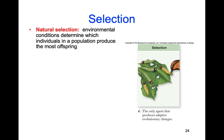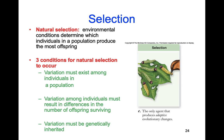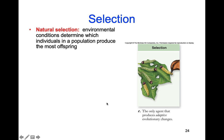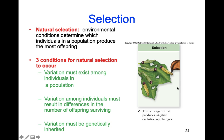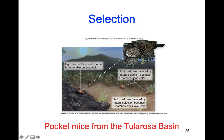Natural selection is a little different — the environment picks which traits are advantageous and which are not. In this picture there's a very hungry bird, and we've got yellow insects and green insects on a green leaf. The bird will pick the yellow insects because they show up more — so being green is advantageous, being yellow is definitely not. For natural selection to occur, three things must happen: there must be variation among the population; individuals must differ in the number of offspring surviving; and this variation must be genetically inherited, not caused by something like sunburn.